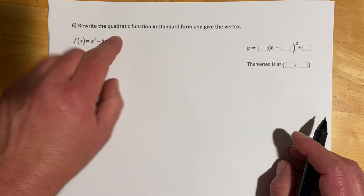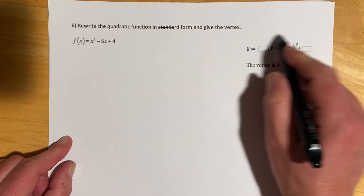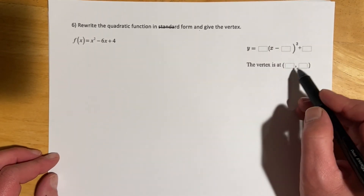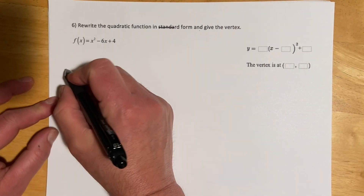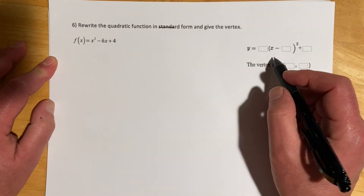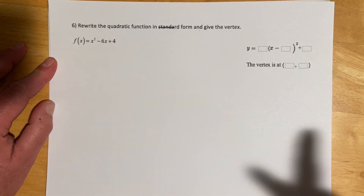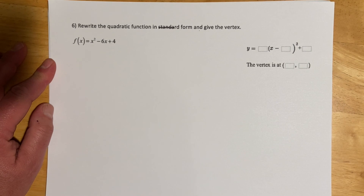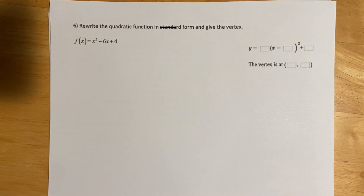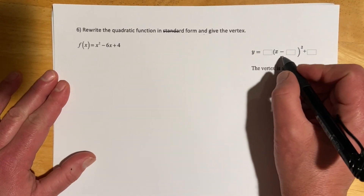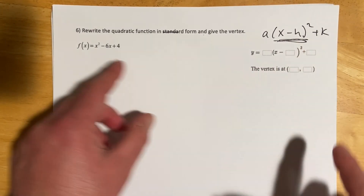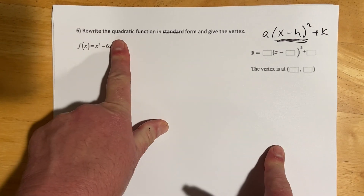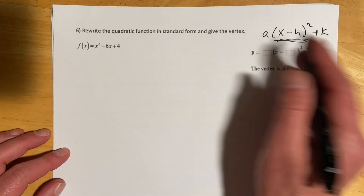Number six says rewrite the quadratic function in standard form — which is what I'm calling vertex form — and then give the vertex. If you remember completing the square from the last section, here's one of the places we'll need that again. This is the tricky version of completing the square, but if you can do it it's actually easier than the negative b over 2a method I'll show in the next section. Section 5.4 will flow more with the quadratic formula, but here we complete the square to get into vertex form: y equals a times x minus h squared plus k.